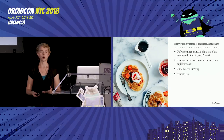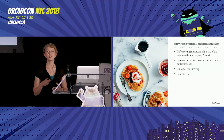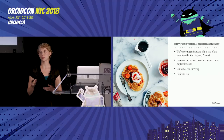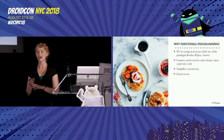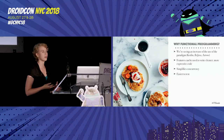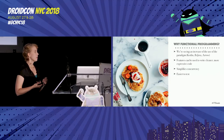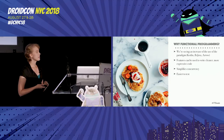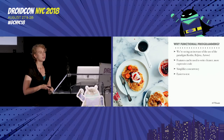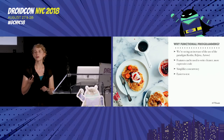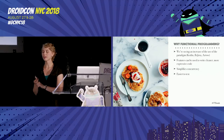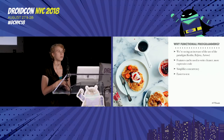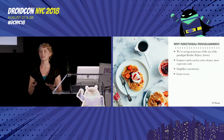Why functional programming? We're seeing an increase in the use of functional programming with things like Kotlin, RxJava, and Arrow. This is because some of these features can be used to write cleaner, more expressive code. It can simplify concurrency, and it can be easier to test. We'll take a look at why some of those things are.